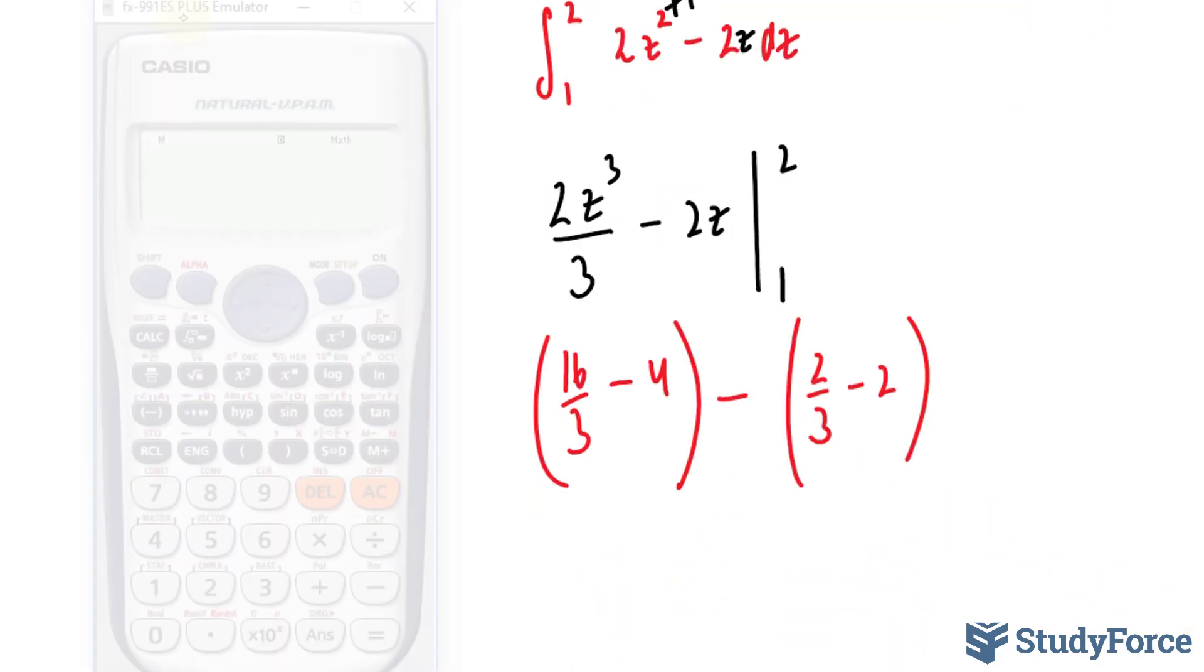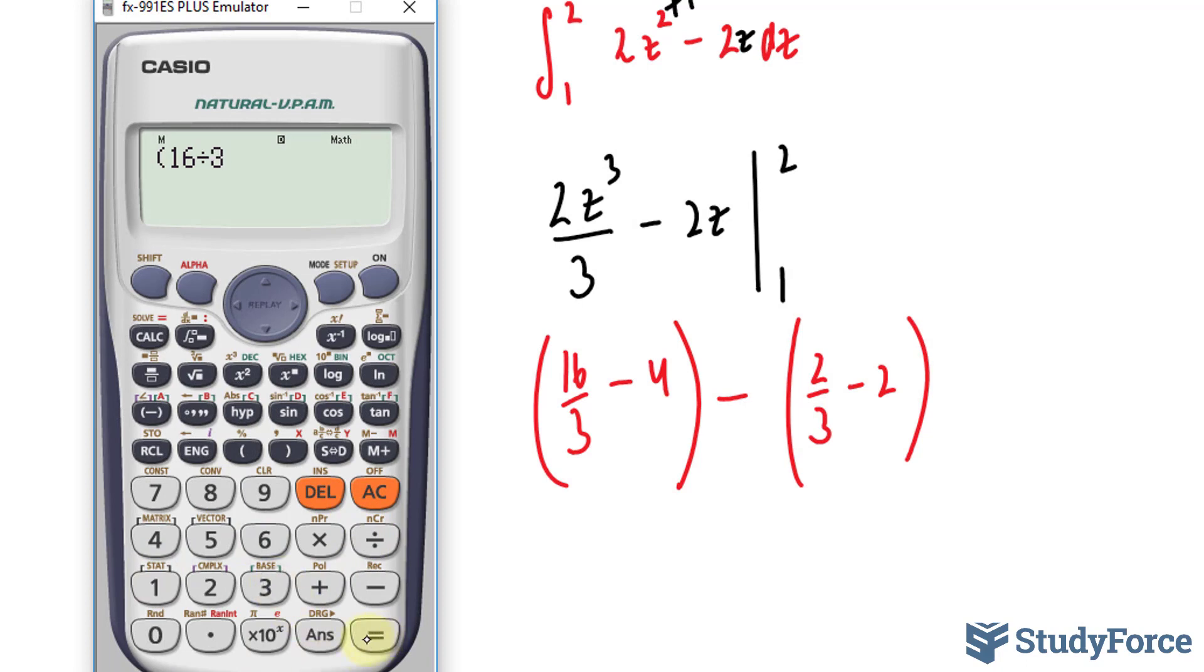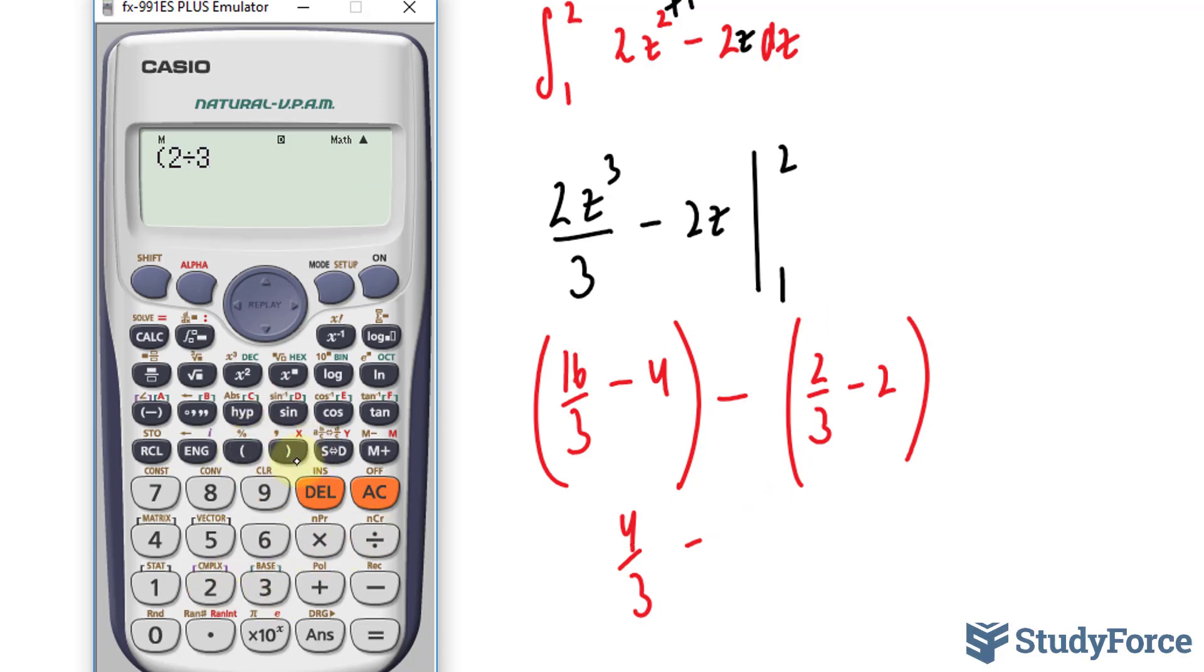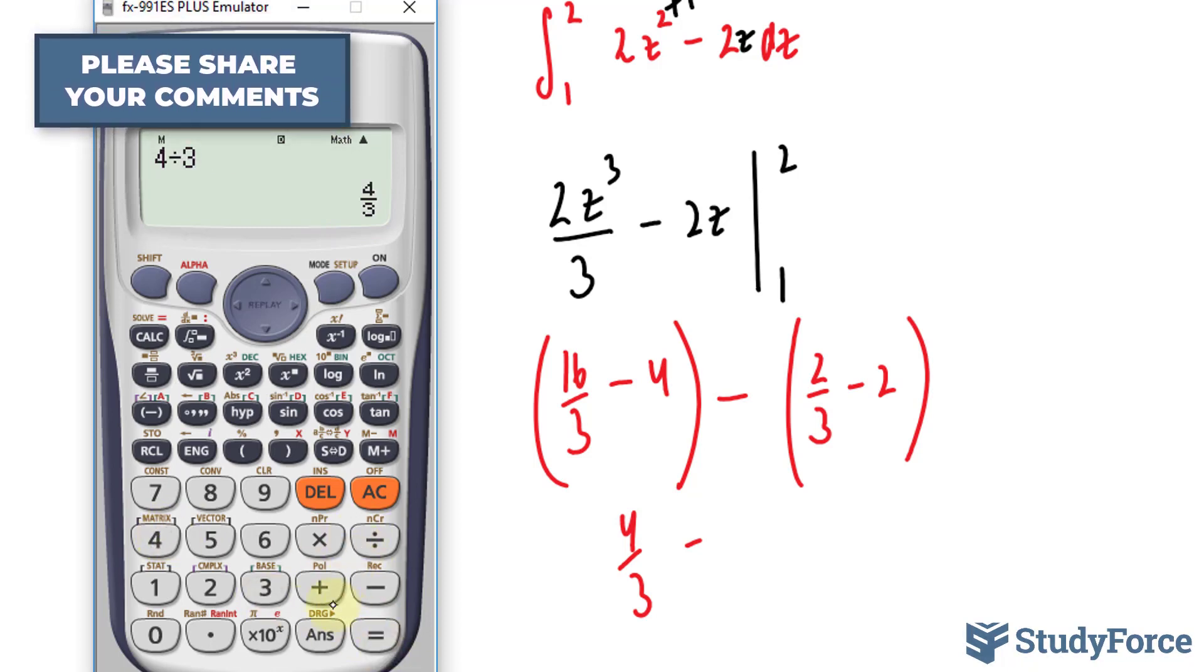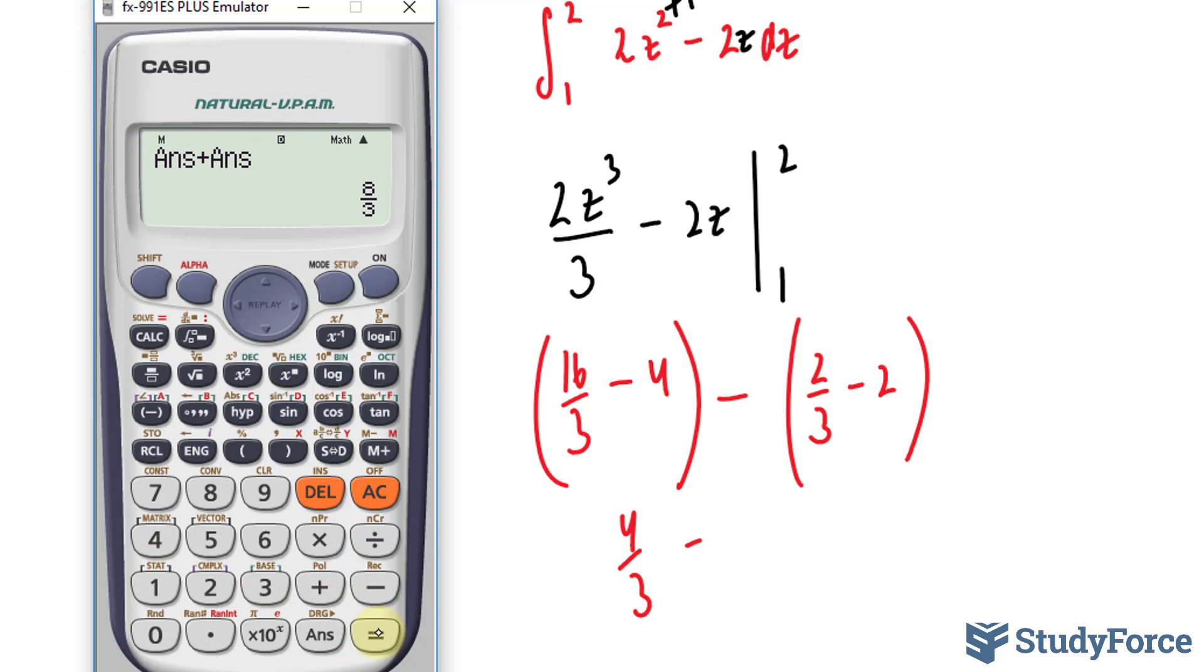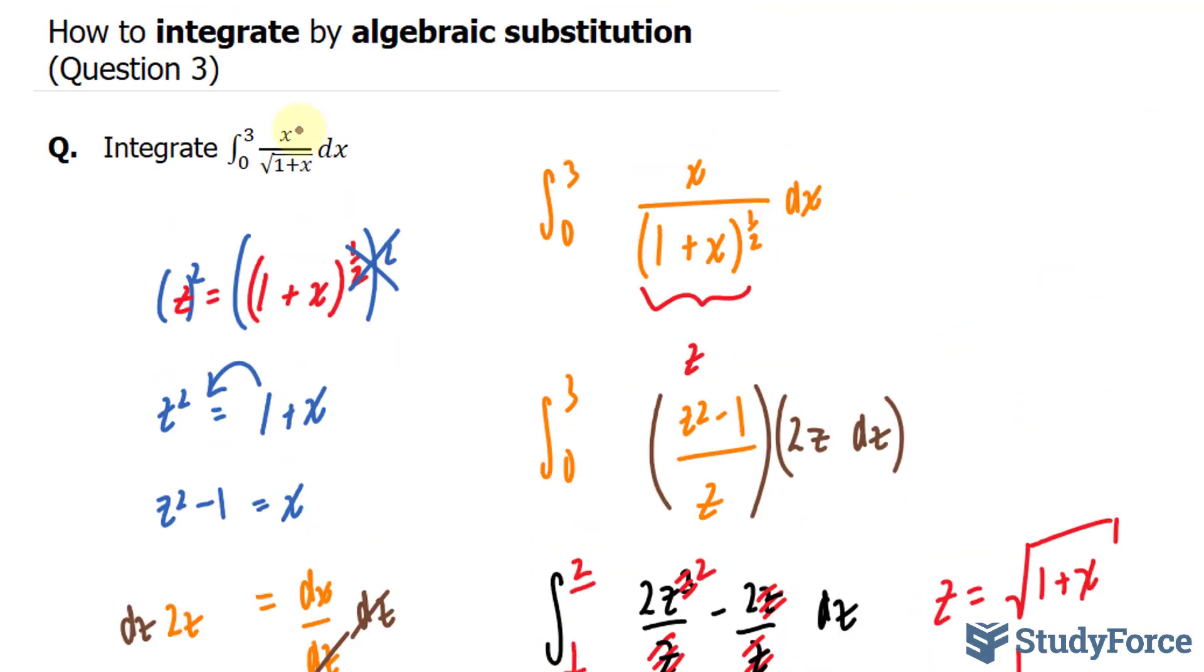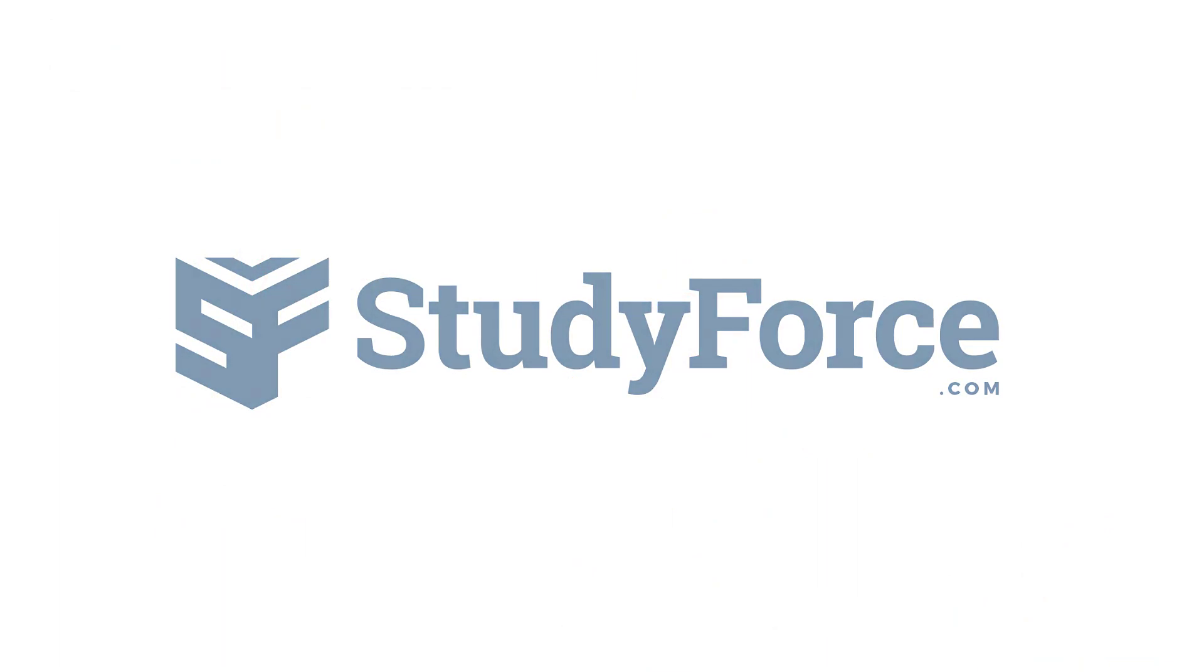Using our calculator, 16 over 3 minus 4. We end up with 4 over 3. Minus the difference of those two terms. 2 over 3 minus 2. So we have 4 over 3 minus minus 4 over 3. So 4 over 3 plus 4 over 3. And we end up with 8 over 3. That represents the area underneath the curve of this function between 0 and 3. And there you have it. That is how to integrate by algebraic substitution. Thank you.